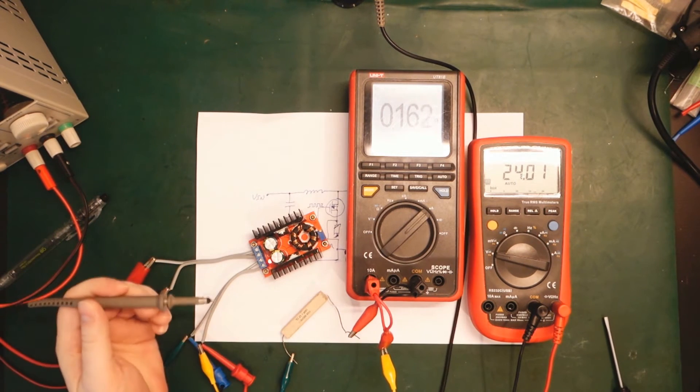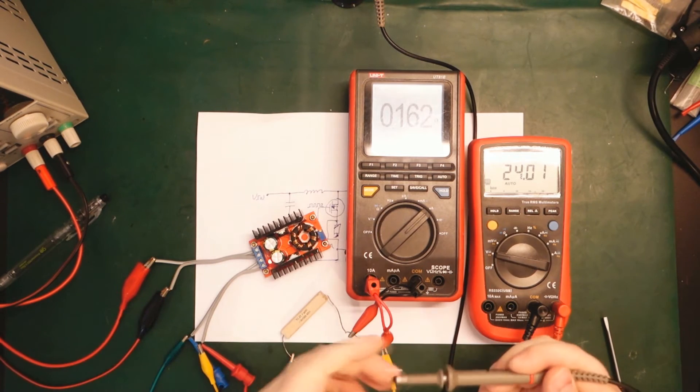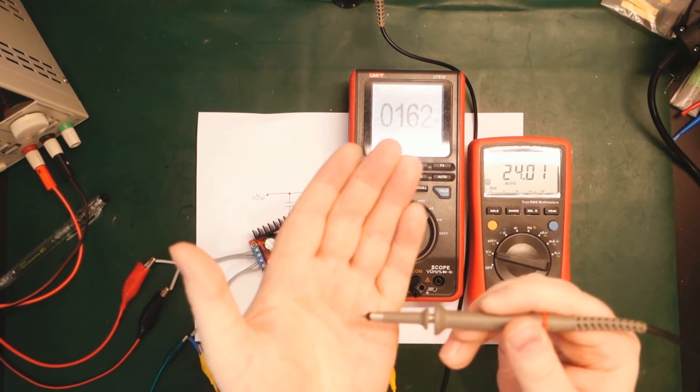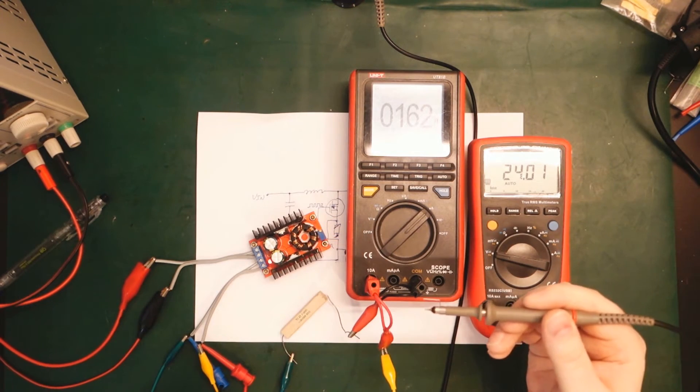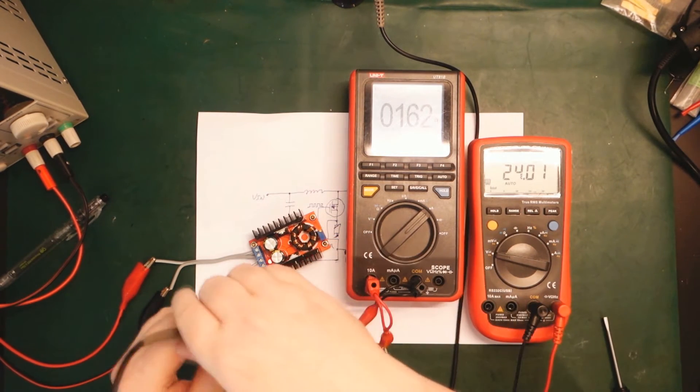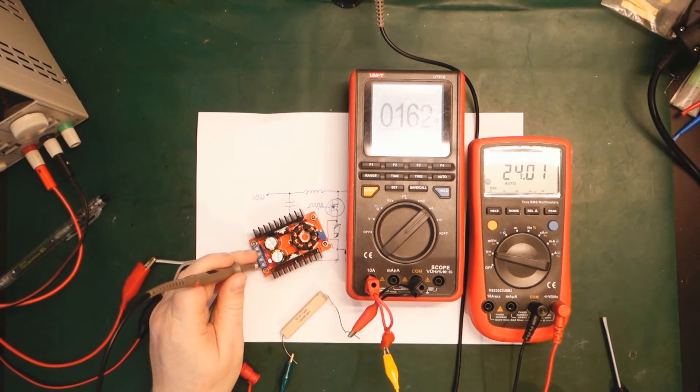I also have scope. I'm going to be using the short ground spring here. Just to get the most accurate result here. Let's try and measure the output and see what the ripple and switching noise looks like.